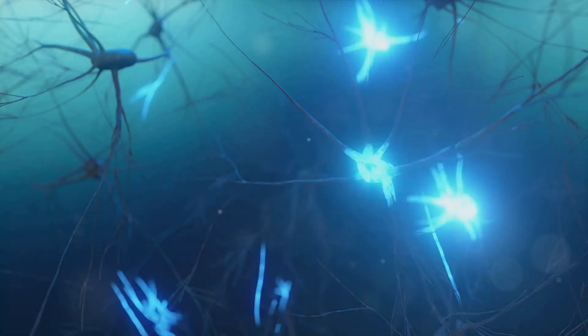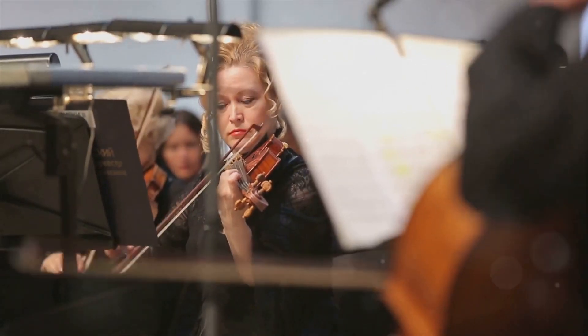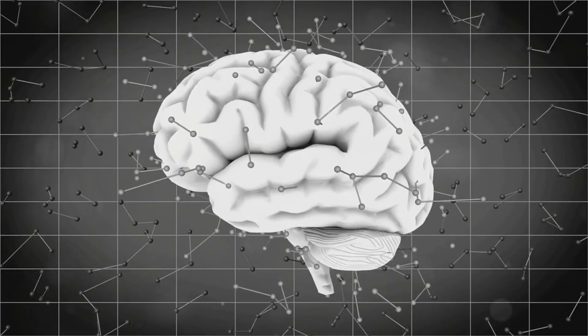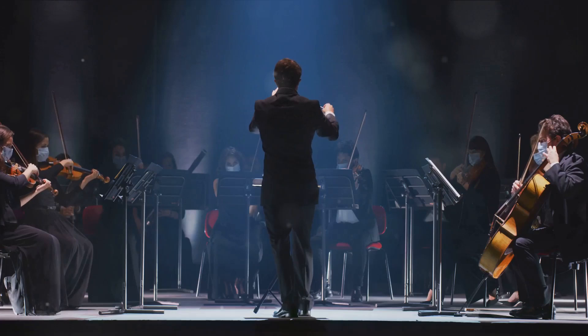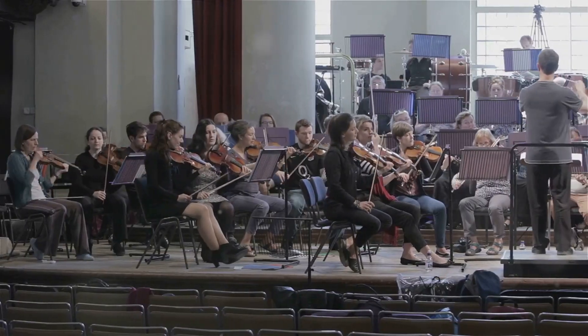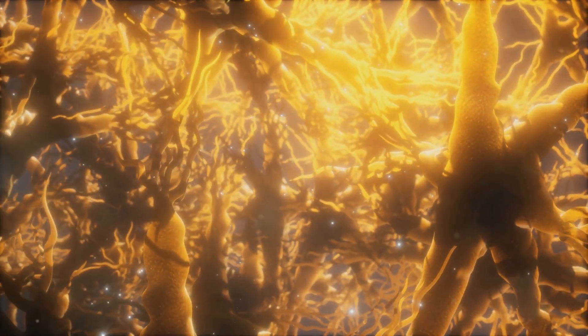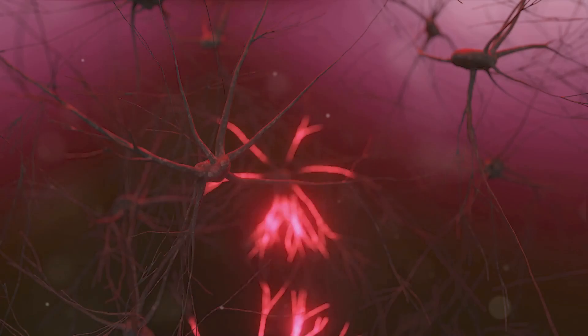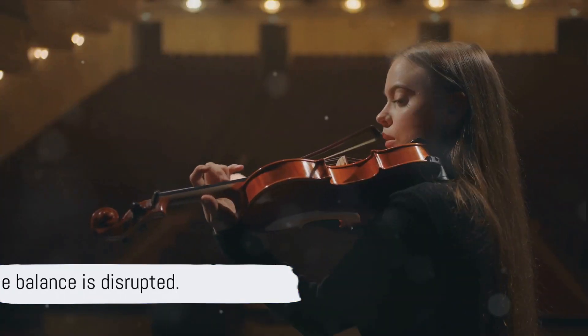Isolation can also disrupt the balance of our brain's neurotransmitters. These neurotransmitters, which include dopamine and serotonin, play crucial roles in mood regulation and reward processing. Imagine these neurotransmitters as a complex symphony orchestra. When all the musicians play in harmony, we experience a balanced mood and a healthy sense of reward in response to positive experiences. But when social isolation comes into play, it's like the orchestra is missing key musicians. The balance is disrupted.